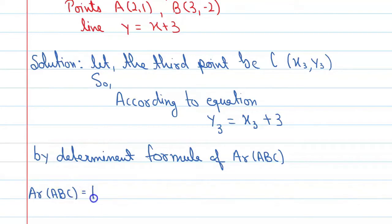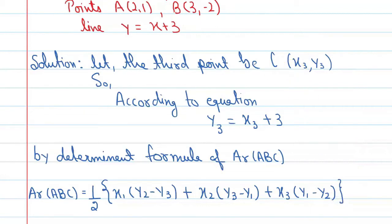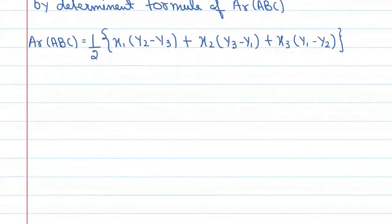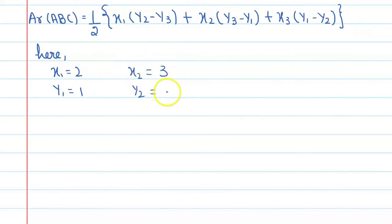Area of triangle ABC equals one-half times: x1(y2 - y3) + x2(y3 - y1) + x3(y1 - y2). Now we have x3 = x3 and y3 = x3 + 3 from the given equation. These are our values.